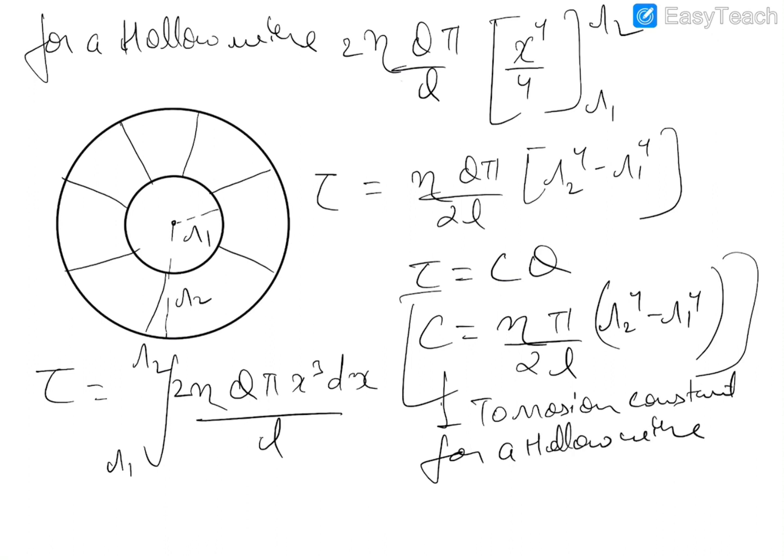In the next video we'll discuss why the shaft of cars is made of a hollow cylinder, or equivalently why a hollow cylinder is tougher to twist compared to a solid cylinder. Thank you.